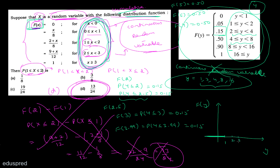मैं quickly यहाँ पे rough graph बना के दिखा रहा हूँ। y-axis पर है F(y), x-axis पर है y। y < 1 पे CDF की value 0 है। 1 से 2 के बीच value है 0.05 — यहाँ 1 included नहीं है तो open circle लगाओ। 2 से 4 के बीच value है 0.15 — यहाँ 2 included होगा। Graph में जो jump दिख रही है, वो actually probability है कि y = 2, जो है 0.15 minus 0.05 = 0.10।